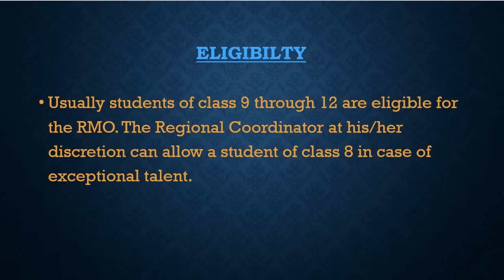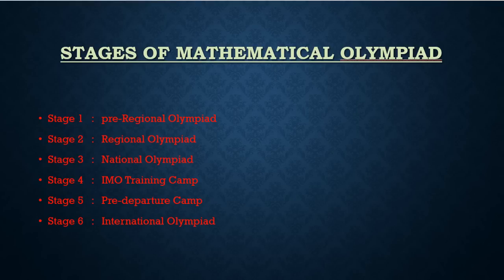Usually students of classes 9 through 12 are eligible for the RMO. In some cases, an exceptionally brilliant student of class 8 is allowed to take part, but the Regional Coordinator has the discretion to allow or bar a student from entering the exam premises. Let's go to the stages one must follow to reach the international level.